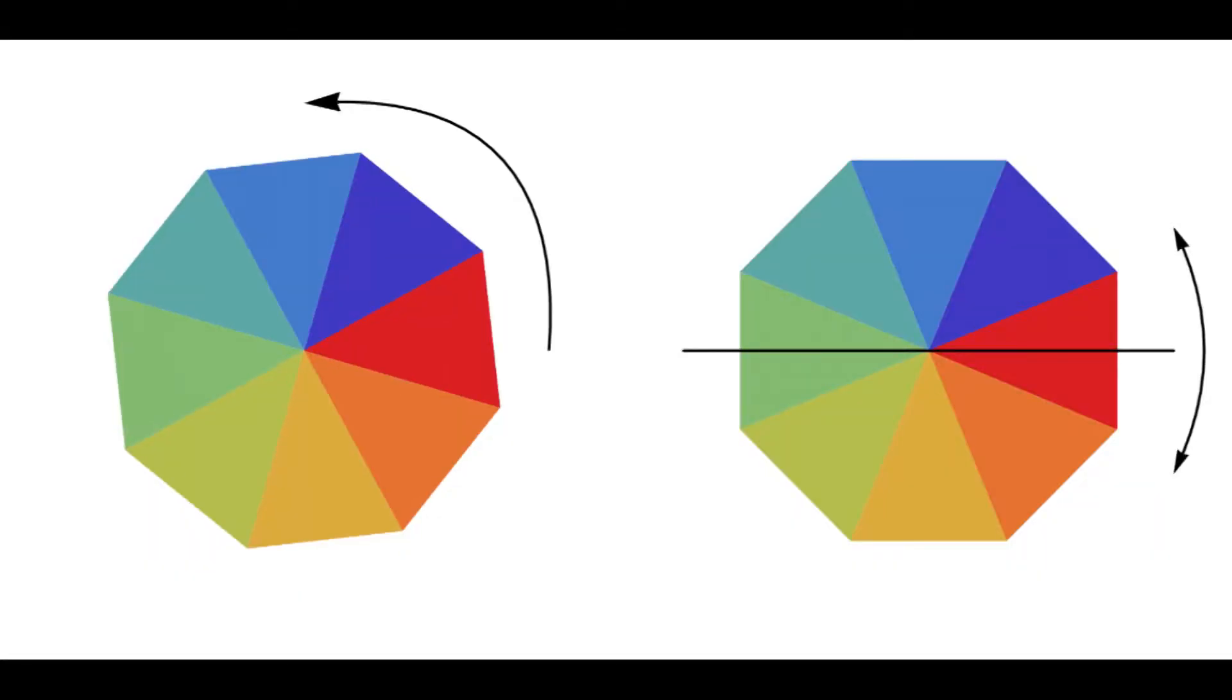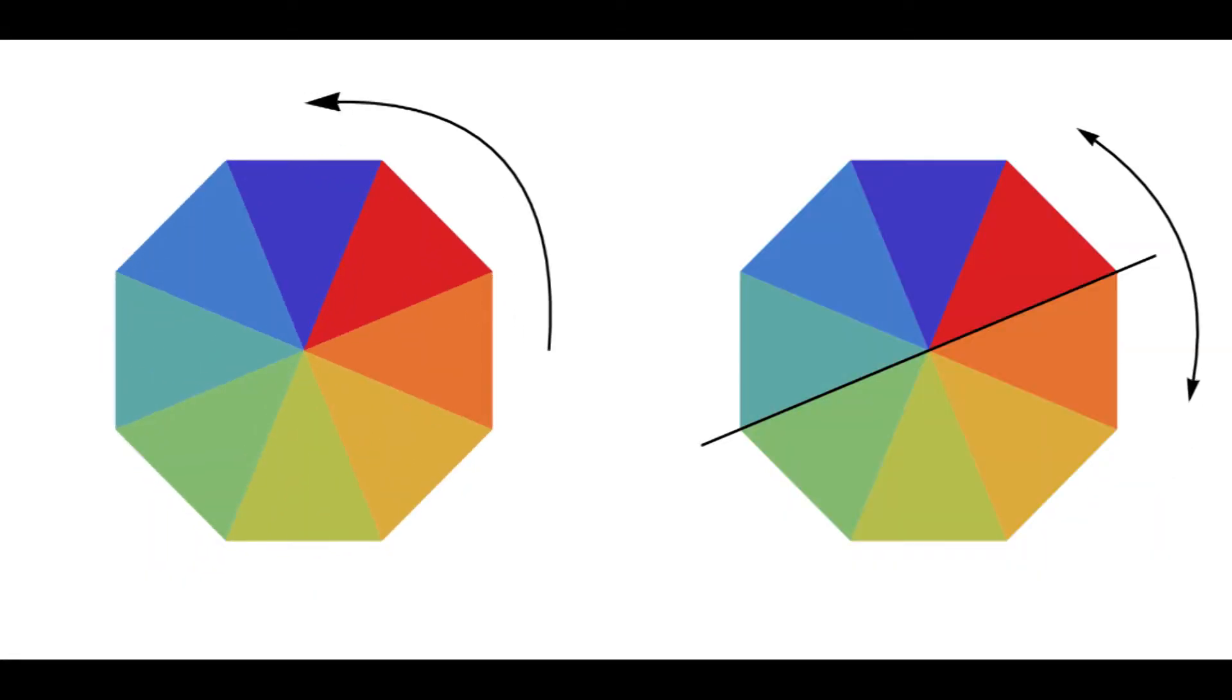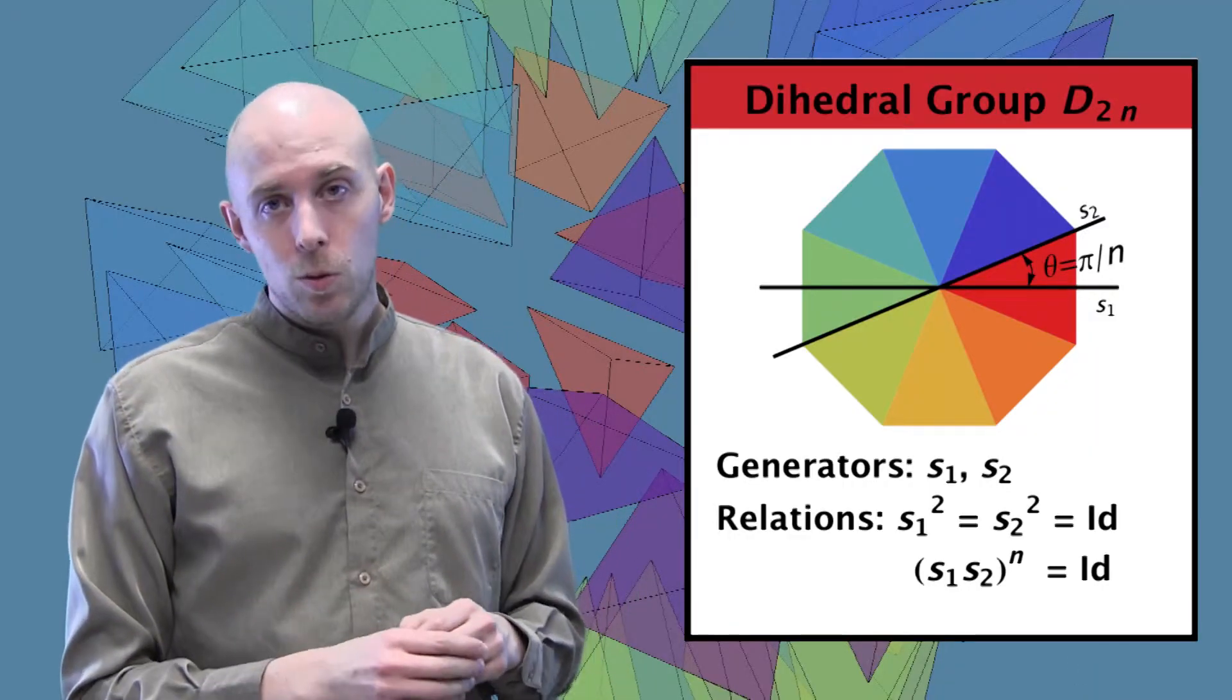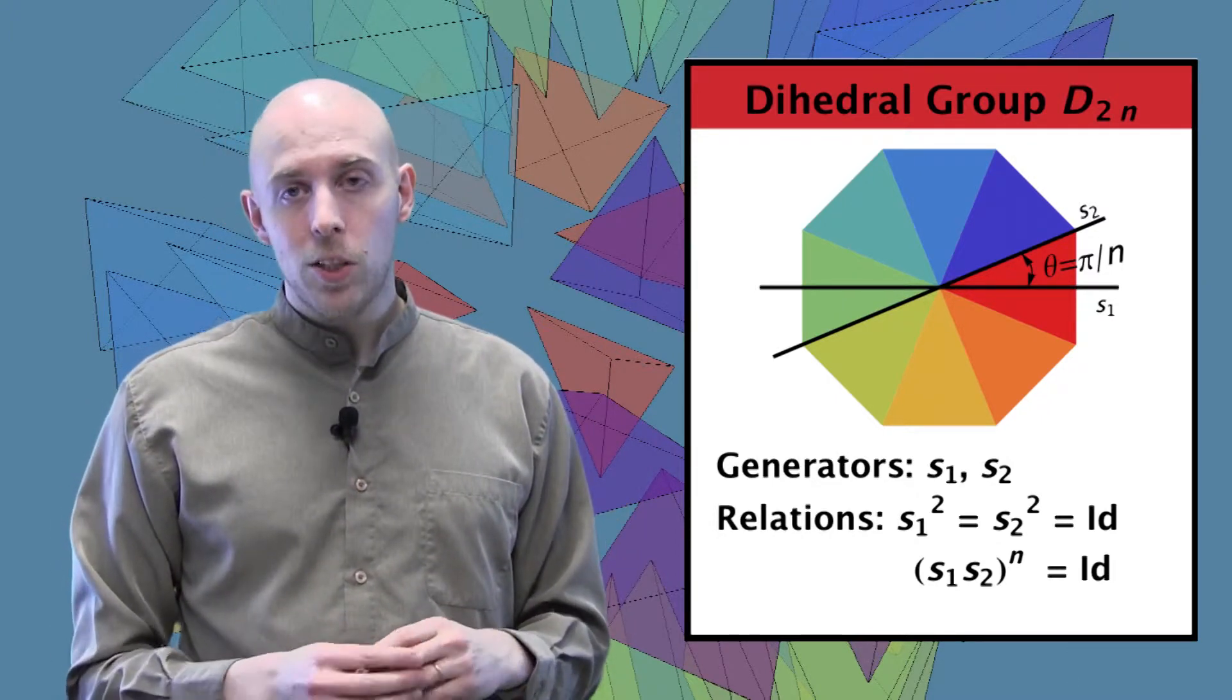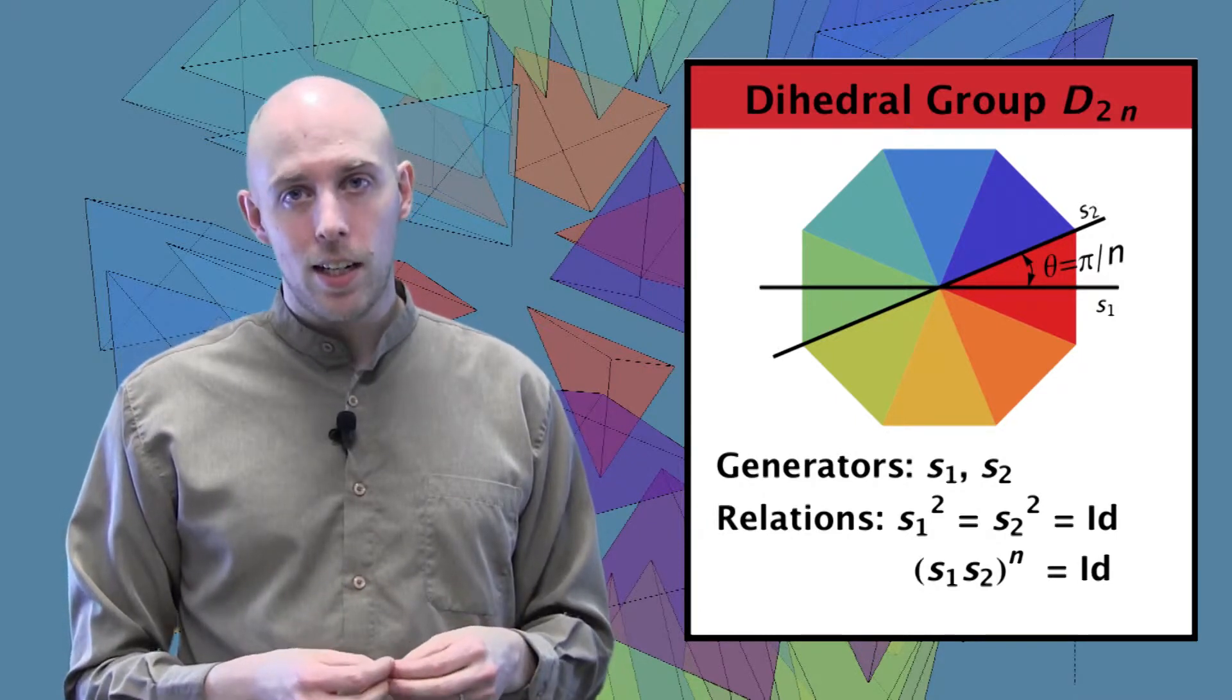Now the reflection fits right at home, but the rotation, where does that fit? So a single rotation corresponds to a sequence of two flips, as you can see right here. So the dihedral group can be understood as a reflection group, where the two mirrors are placed at an angle of π/n to each other, and that corresponds to a braid relation of (S1 S2)ⁿ equals the identity.